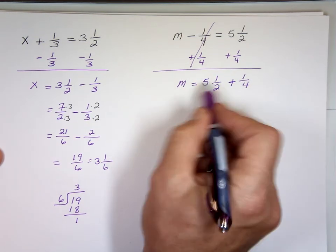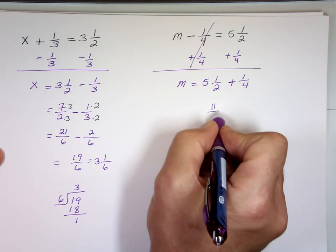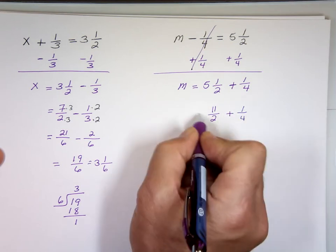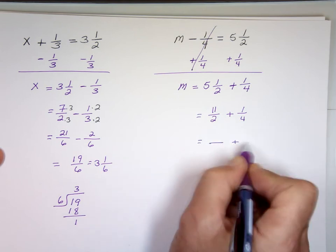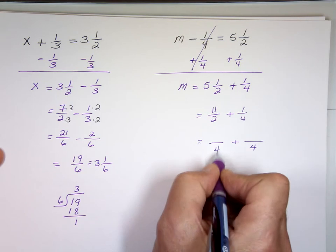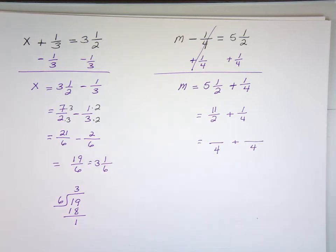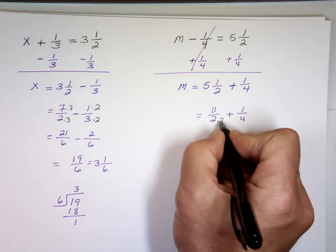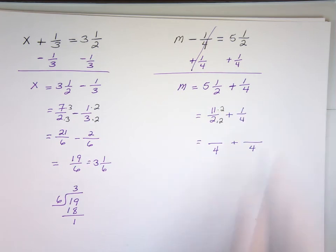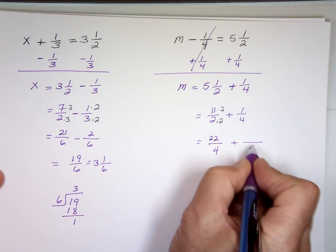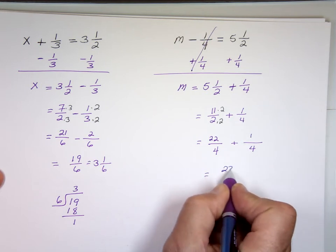M equals five and one half plus one fourth. Two times five, ten and one. Eleven over two plus one over four. What's my LCD? Four. If you use eight, you'll be okay, but you've got to simplify it then. But four is the LCD. You multiply this by two to make it four. That's twenty-two plus one, which is what? Twenty-three over four.